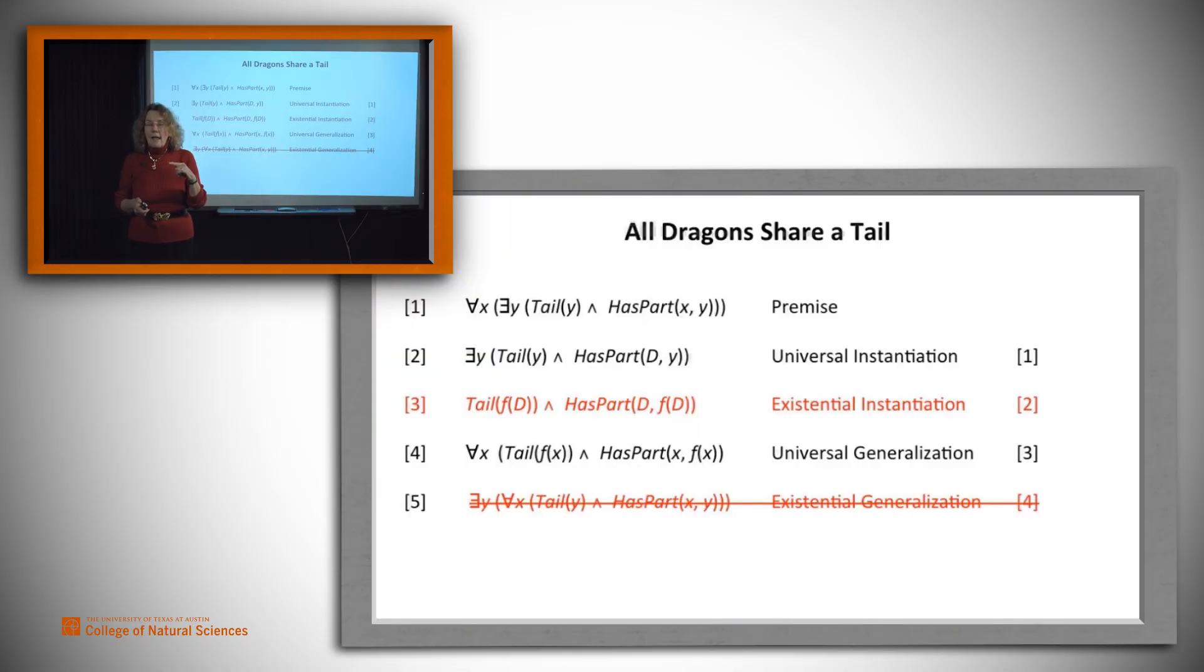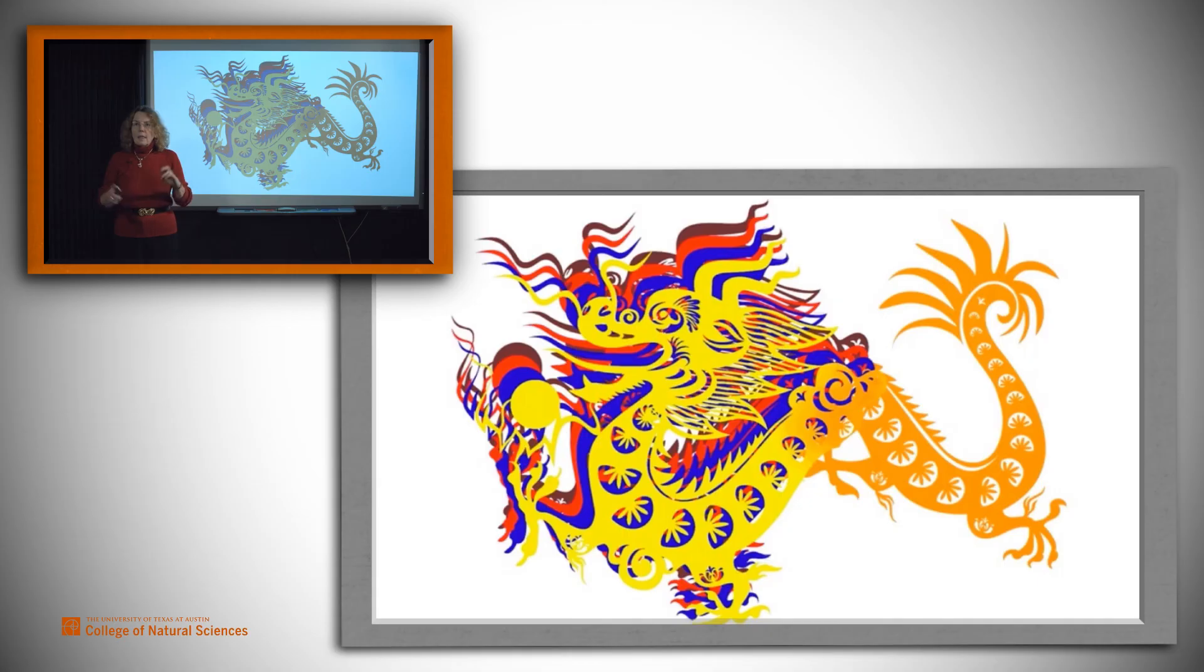We can't defend that based on what we know. So this line that we were able to do before isn't allowed by the sound version of existential generalization. There you have it. Do all dragons share a single tail? Nope.